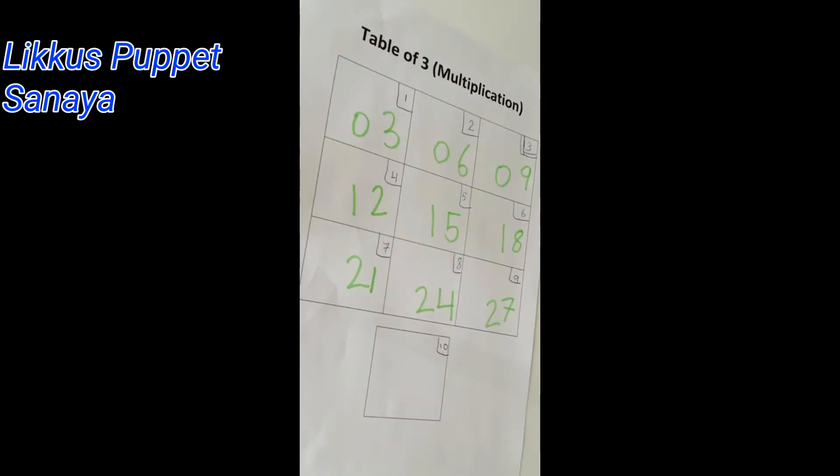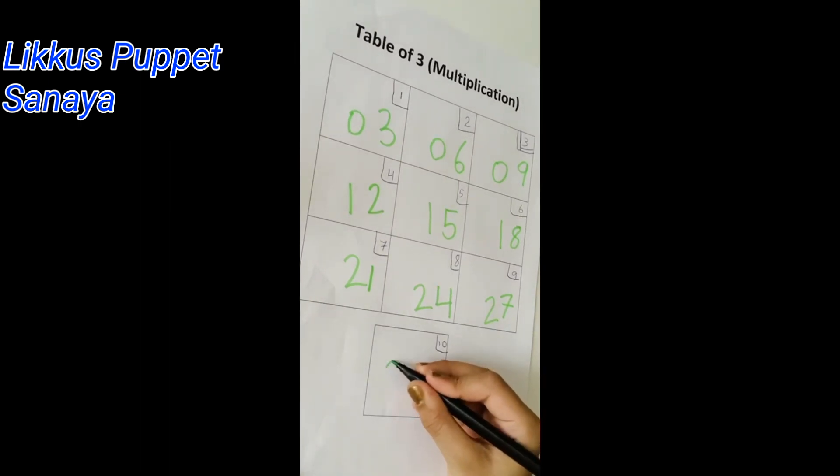And we all know already that 3 times 10 is 30. So, I'm just going to write that down.